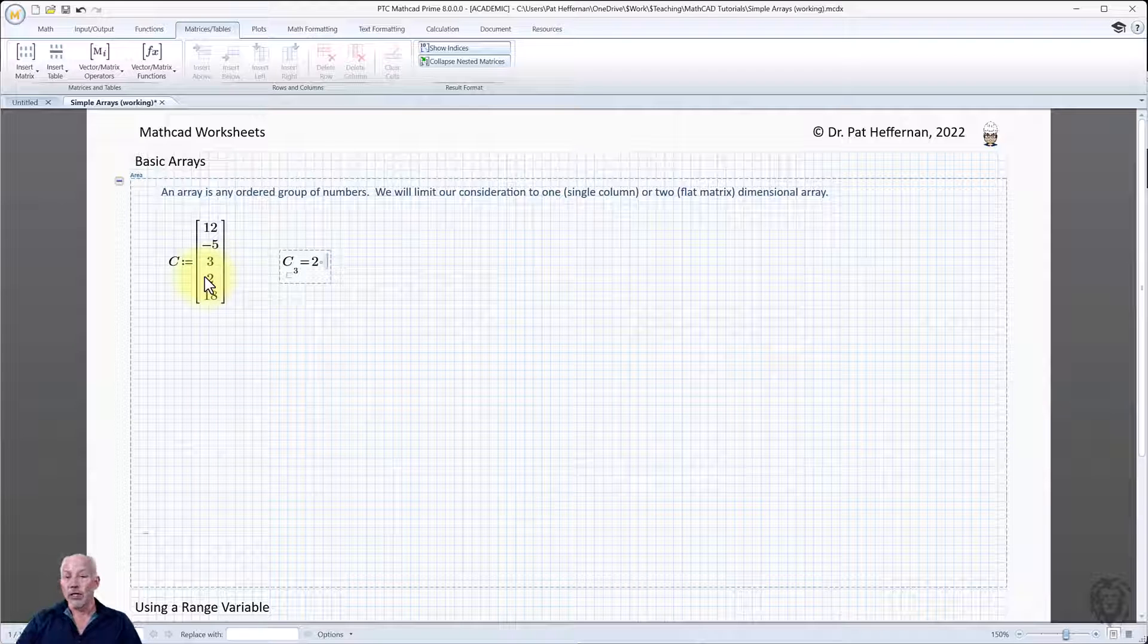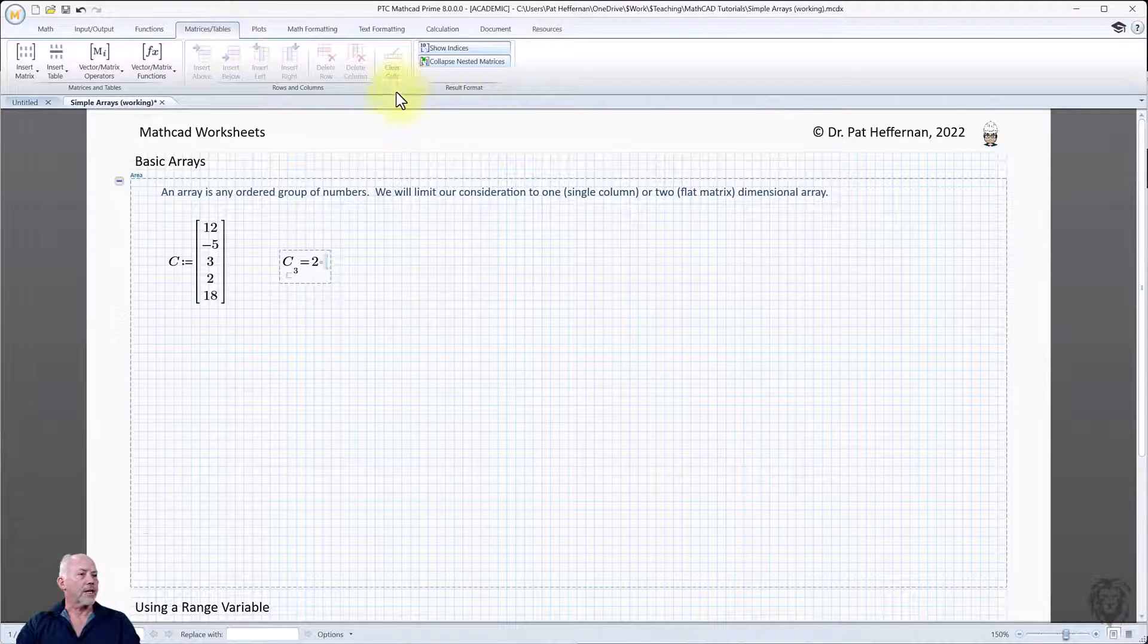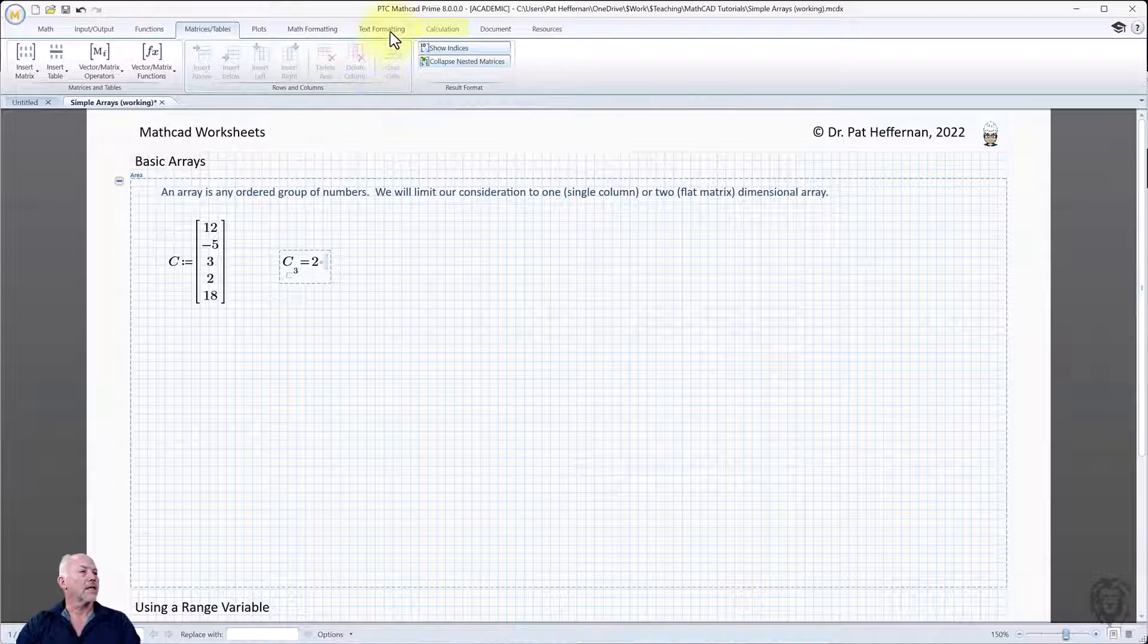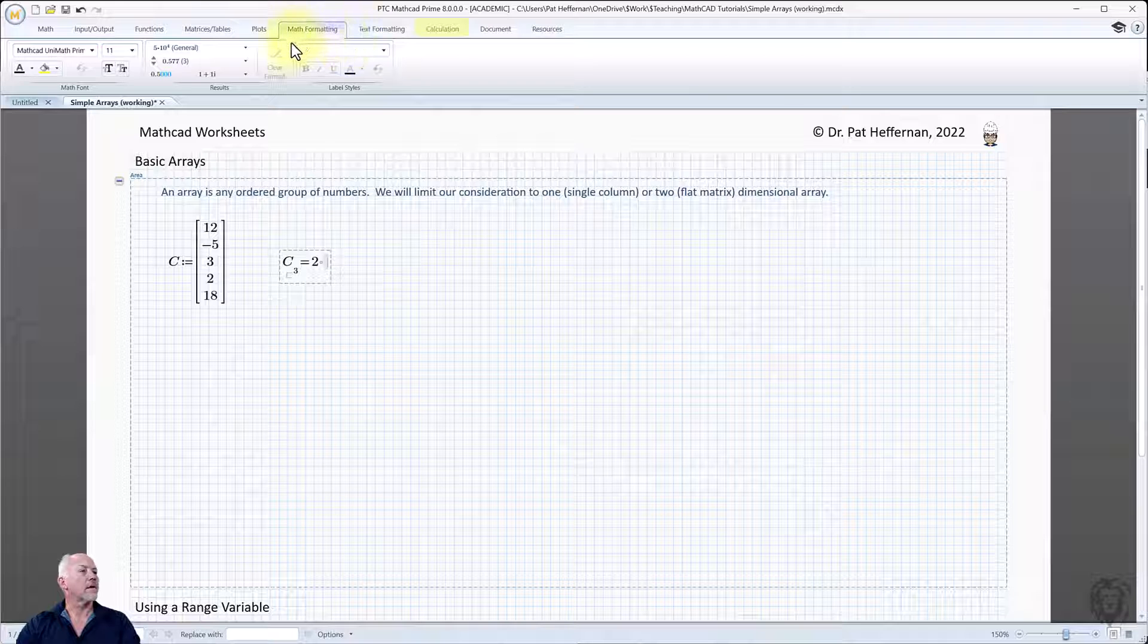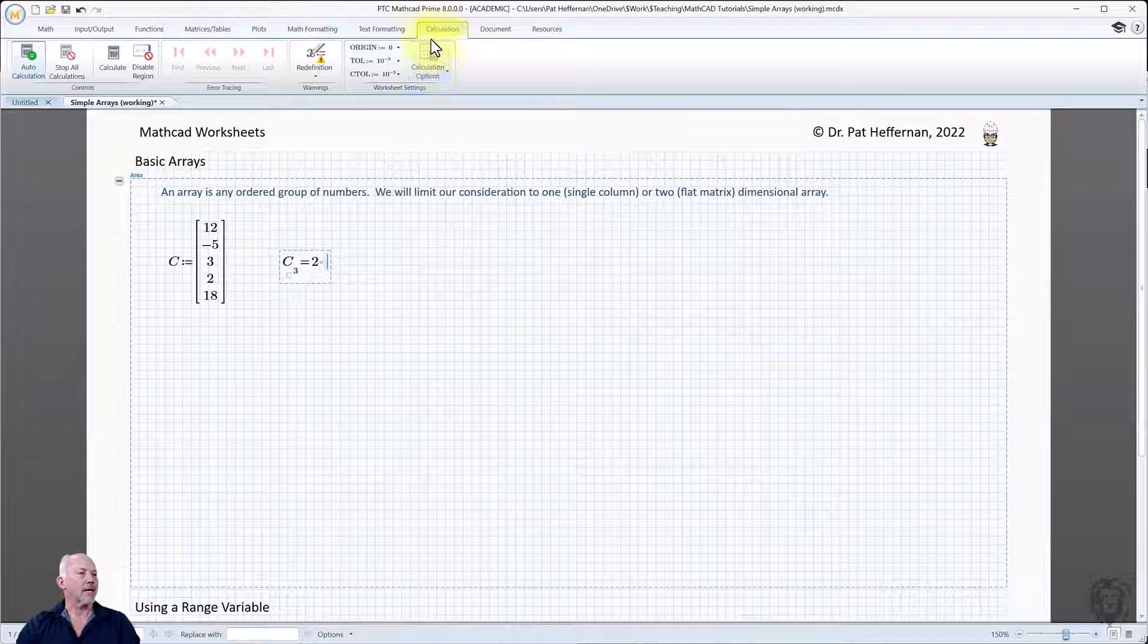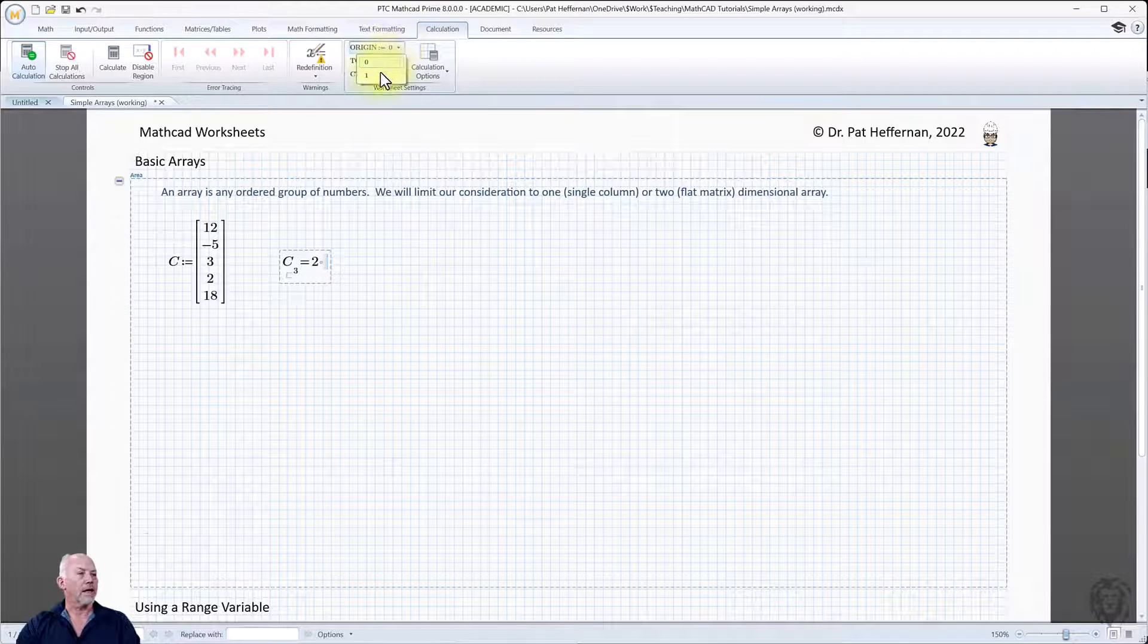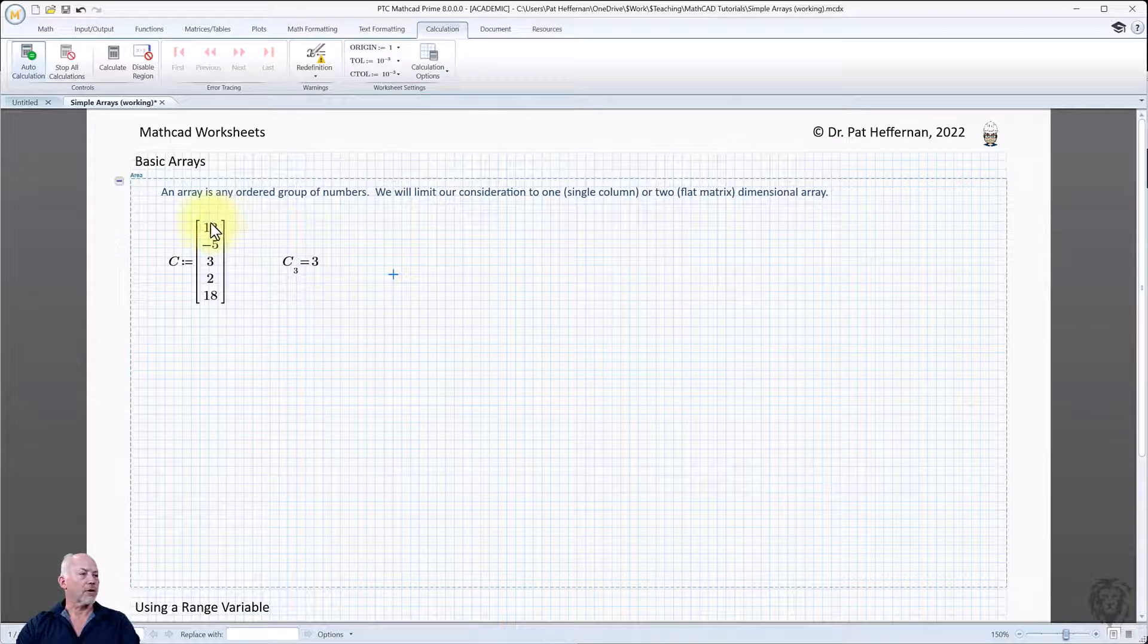Now you can choose to change the origin if you choose. And there's a couple of different ways that you can do that. The first way that you can choose to change that is to do it globally for your entire calculations sheet. So we go up here to Math Formatting tab, maybe not math. Oh, sorry. Calculation tab, my error. And we see up here we have origin is equal to zero. And it gives you an option. We can have it at zero or we can have one. So if we change it to one, you see we get a different return. Starts numbering at one, one, two, three.